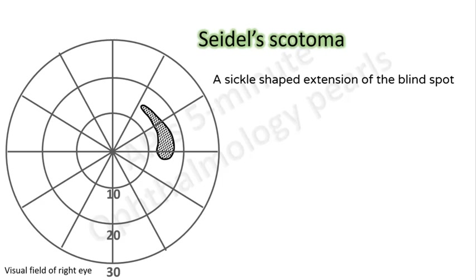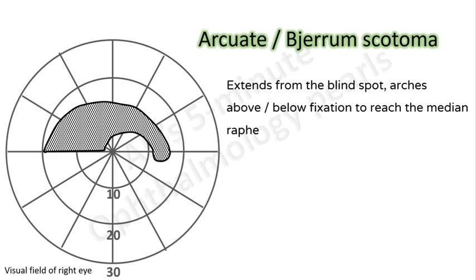An arcuate or Bjerrum scotoma extends from the blind spot, arches above or below fixation widening as it does so to reach the median raphae. This is because of the involvement of nerve fiber bundles in the temporal retina. Also, glaucomatous field defects never cross the horizontal raphae. The anatomical basis for both these points was already discussed.